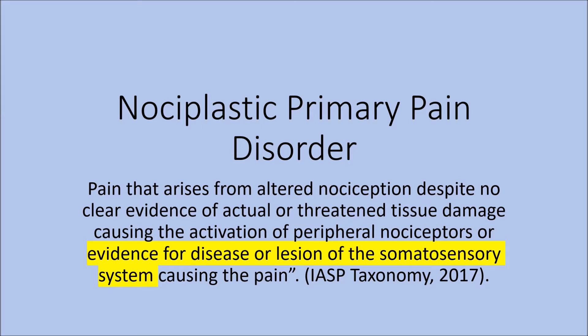Then it says 'evidence for disease or lesion of the somatosensory system causing the pain.' Basically, this means a disease is not detectable based on scans, blood work, or some other test such as a biopsy. The somatosensory system begins in the skin, joints, ligaments, muscles, and fascia. This system informs us when objects touch us and through the position and movement of our body, through stimulation of our muscles and joints. So nothing is detectable in those areas.